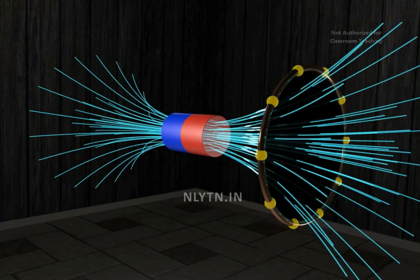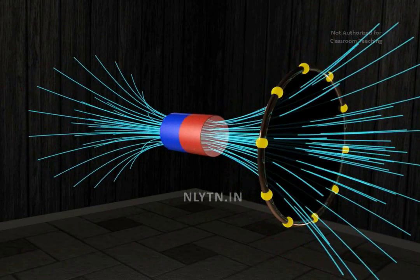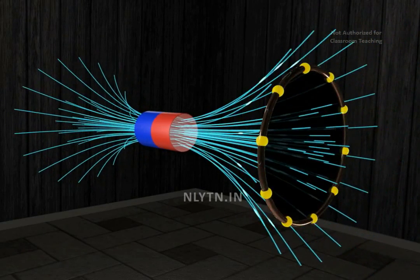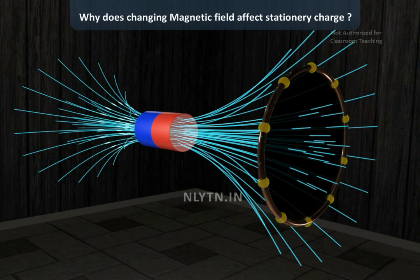Till now, we have discussed that a changing magnetic flux induces electric current. But the question that remains unanswered is why does a changing magnetic field affect electric charges?